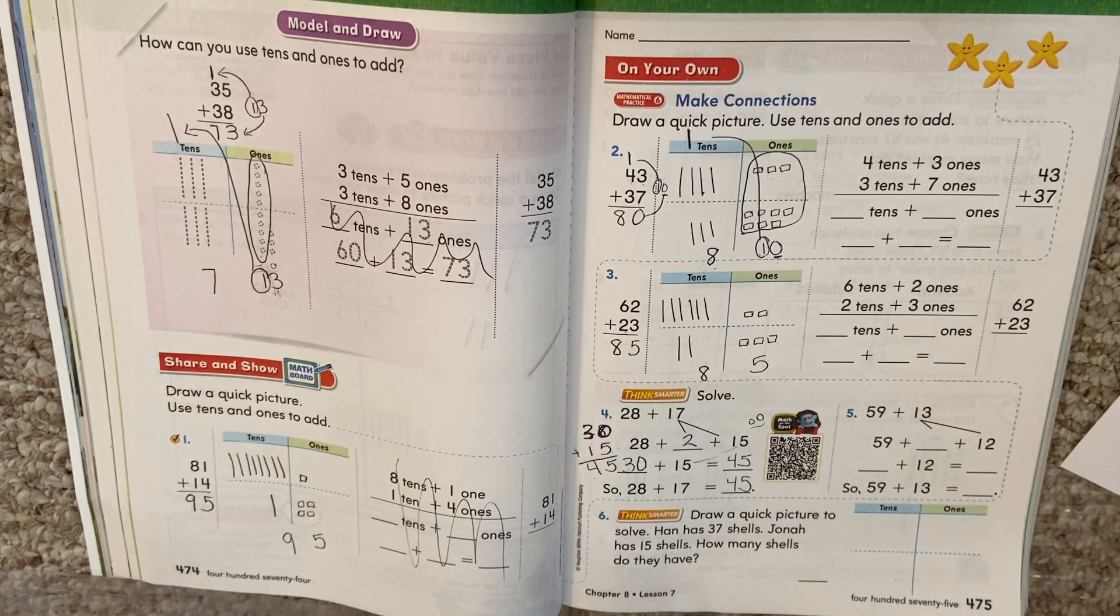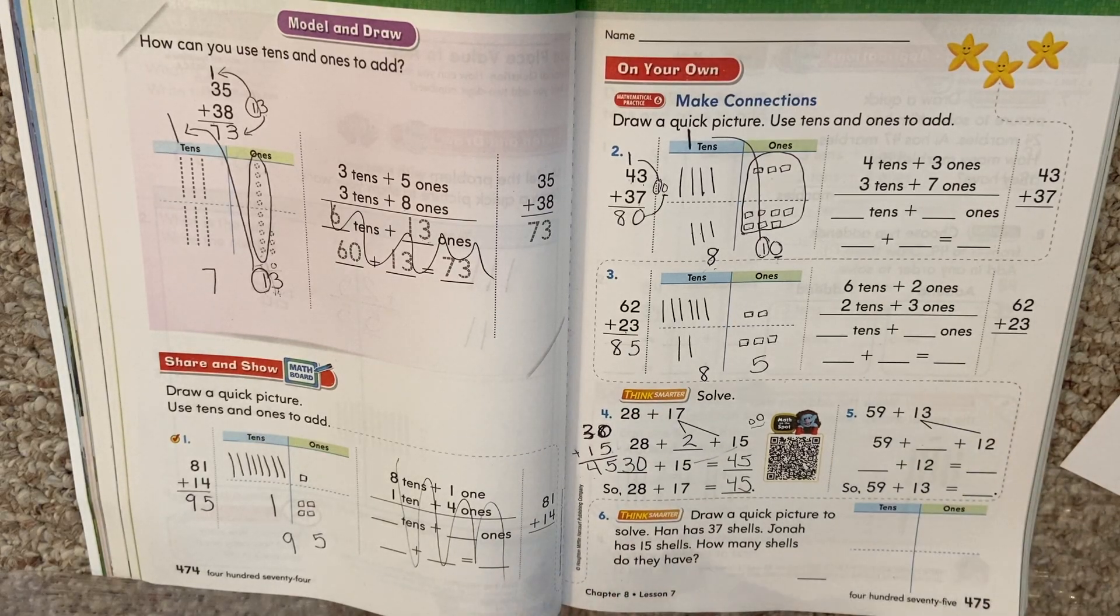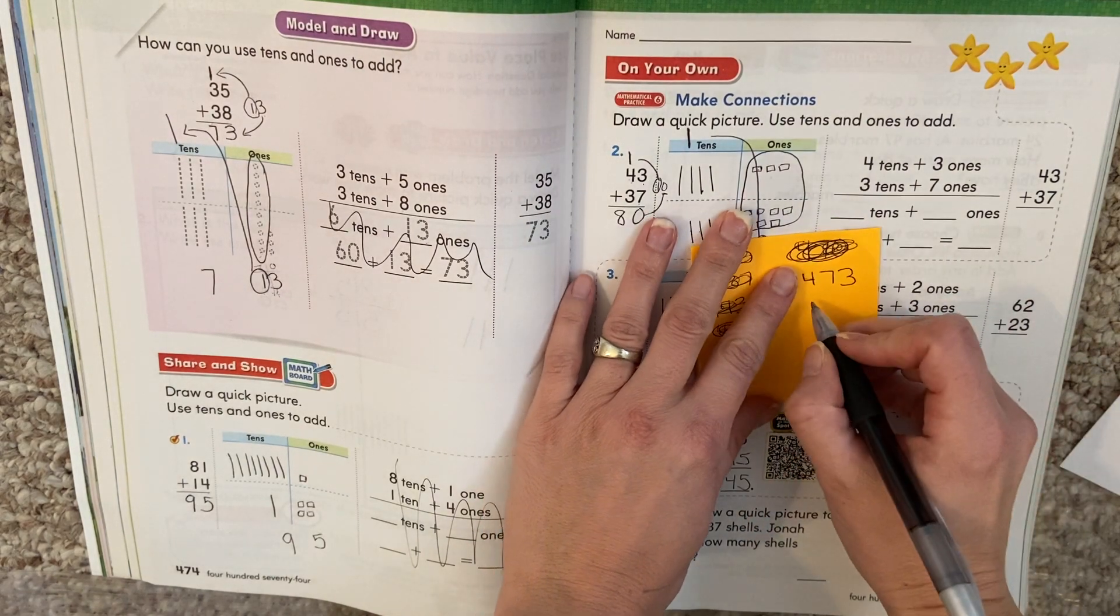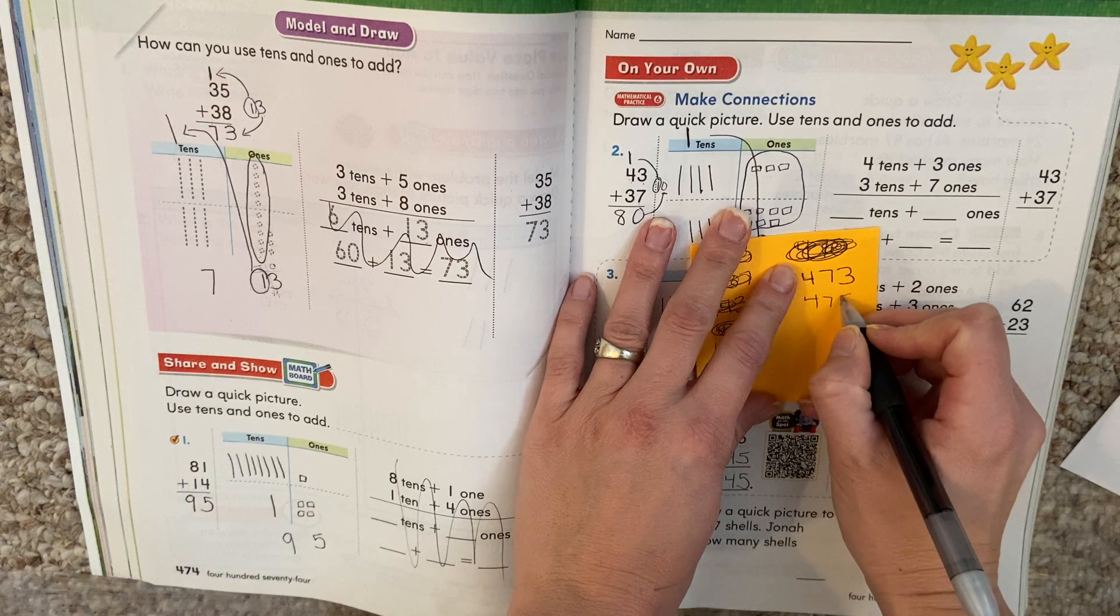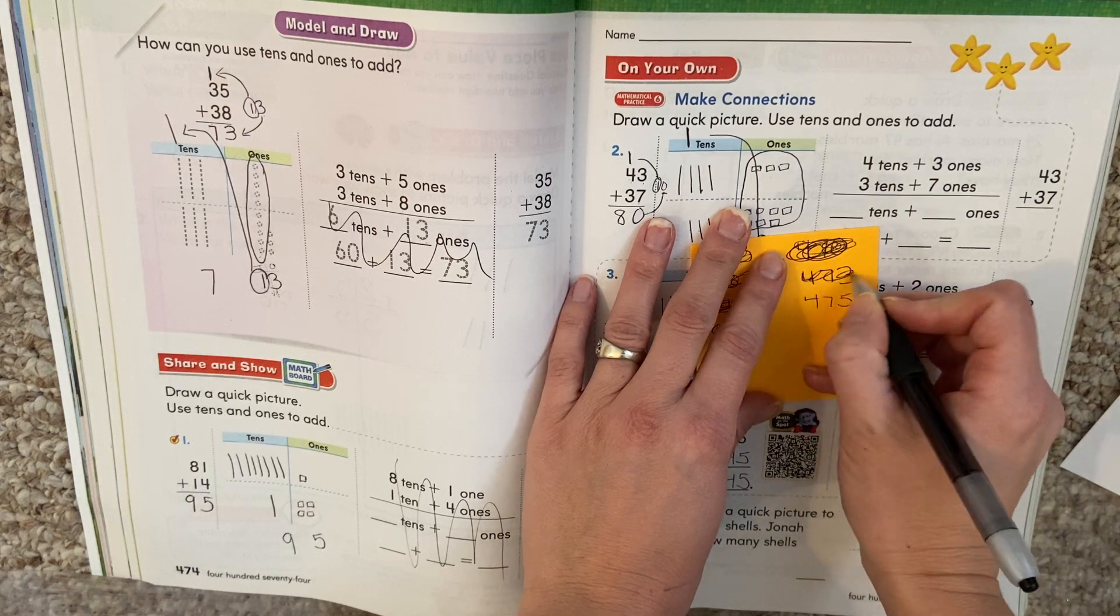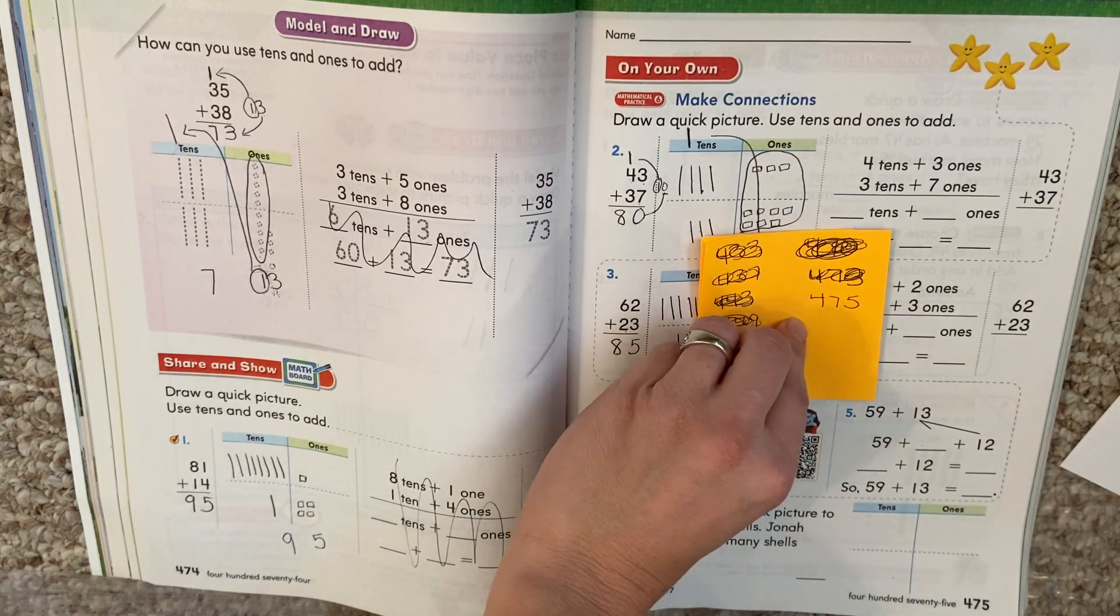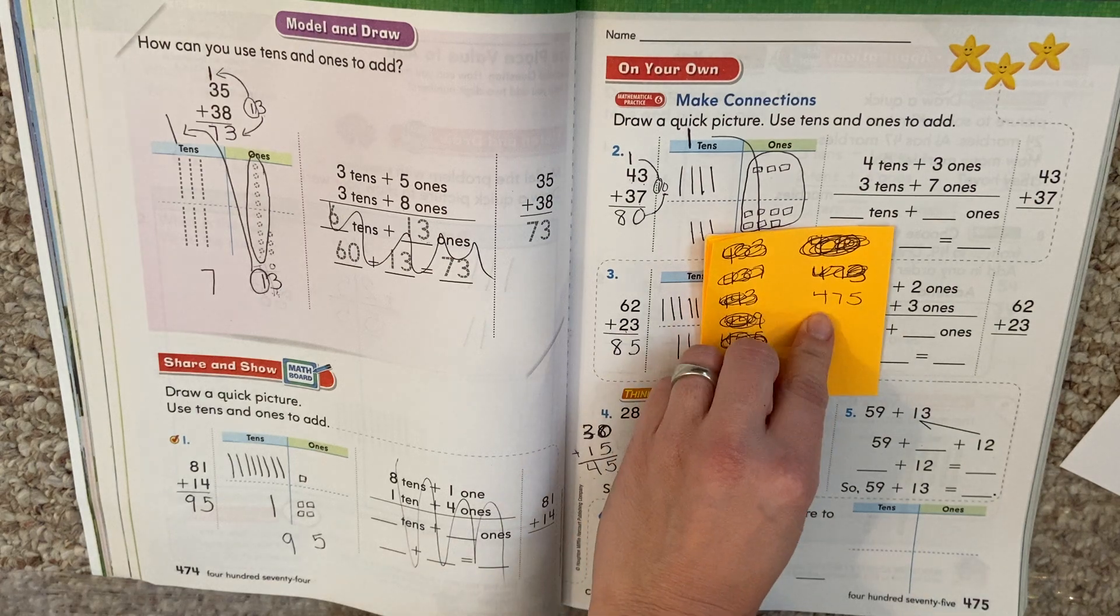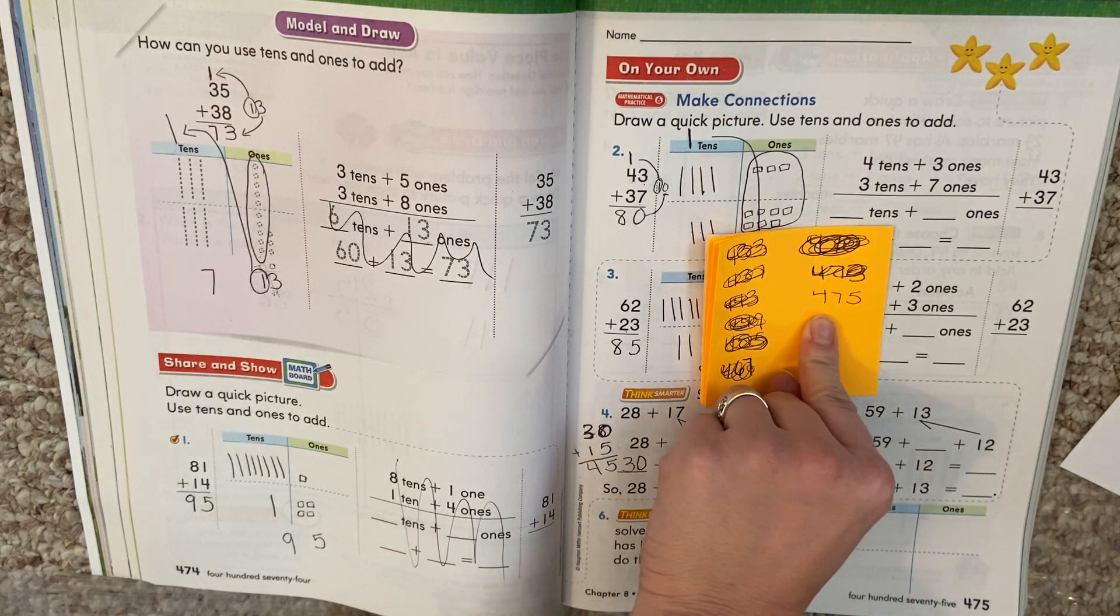All right, my first graders, today we are finishing up lesson 8.7. That is page 475 in your math book. So remember we started this lesson, but we didn't finish it. We're on page 475 in our math book.